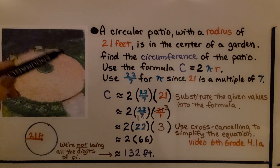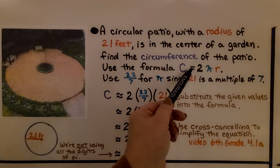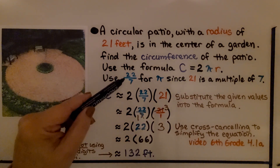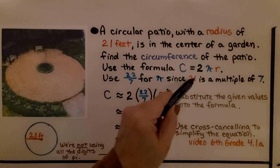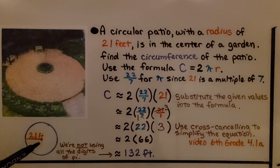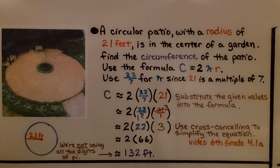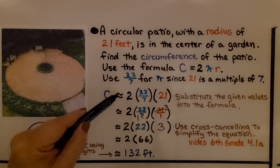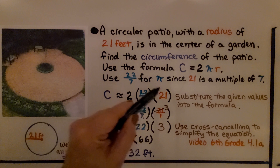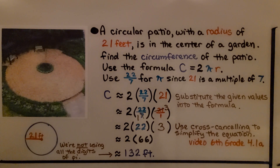A circular patio with a radius of 21 feet is in the center of a garden. Find the circumference of the patio. Use the formula c equals 2πr. Use 22 sevenths for pi since 21 is a multiple of 7. When we have a multiple of 7 for our diameter or radius, it's easier to use the fraction 22 sevenths because we can cross-cancel and go quicker. So we have c is approximately 2 times 22 sevenths times 21, the radius. We substitute the given values into the formula.